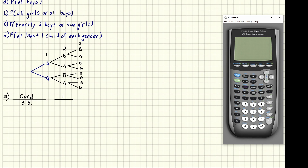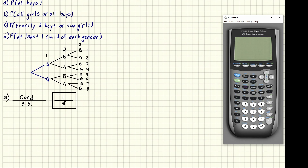Our sample space is all the possible paths. Counting the endpoints: one, two, three, four, five, six, seven, eight — so there are eight possible paths, giving a one-eighth chance of all boys. Another way to deduce this: each child spot has two possible outcomes, so it's two times two times two equals eight total outcomes.